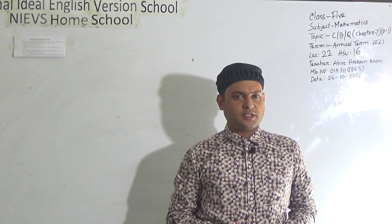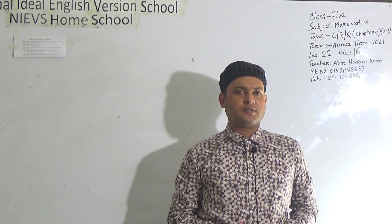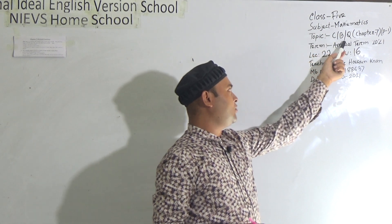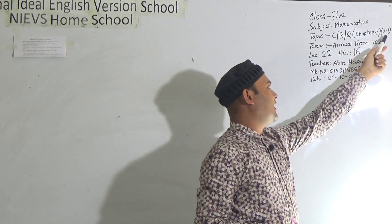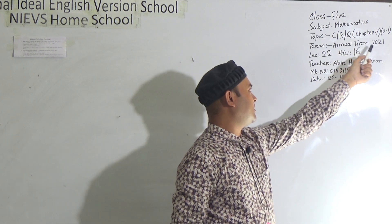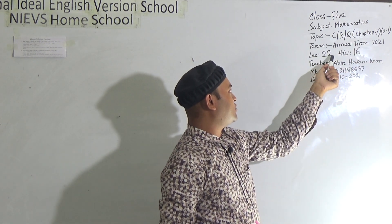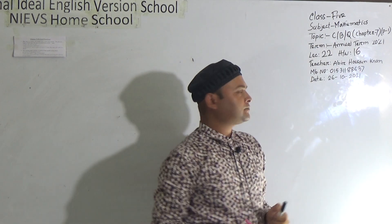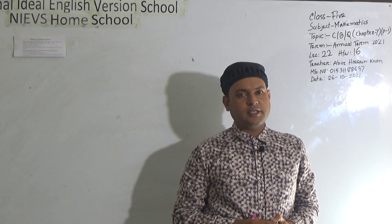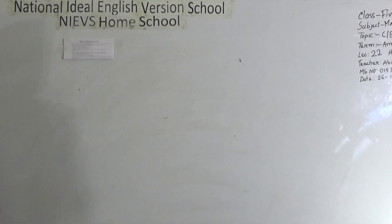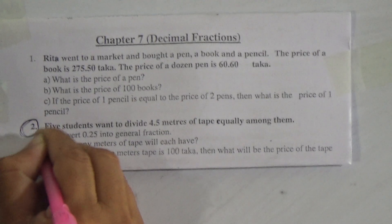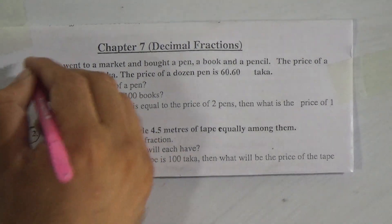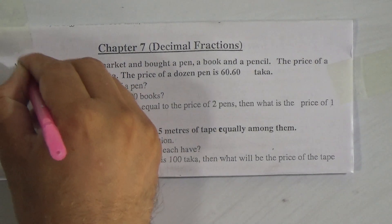Today I am going to take Mathematics class 4 and class 5. Our today's topic is CBQ Chapter 7, Part 1, which is included in your annual term exam. Today's lecture is 22 and HW is 16. Now my dear students, let's start our class. Chapter 7 is Decimal Fraction and here are 2 CBQ questions. We will solve question number 2 here, and question number 1 will be your HW.